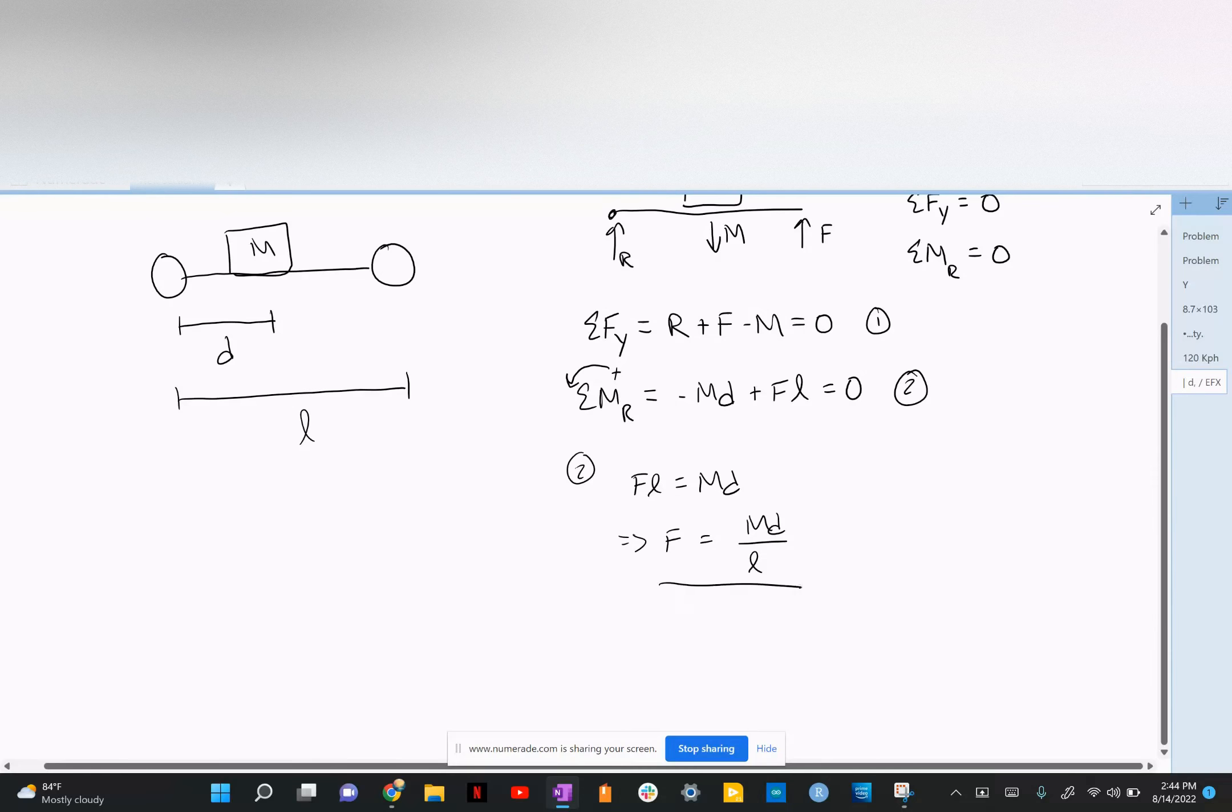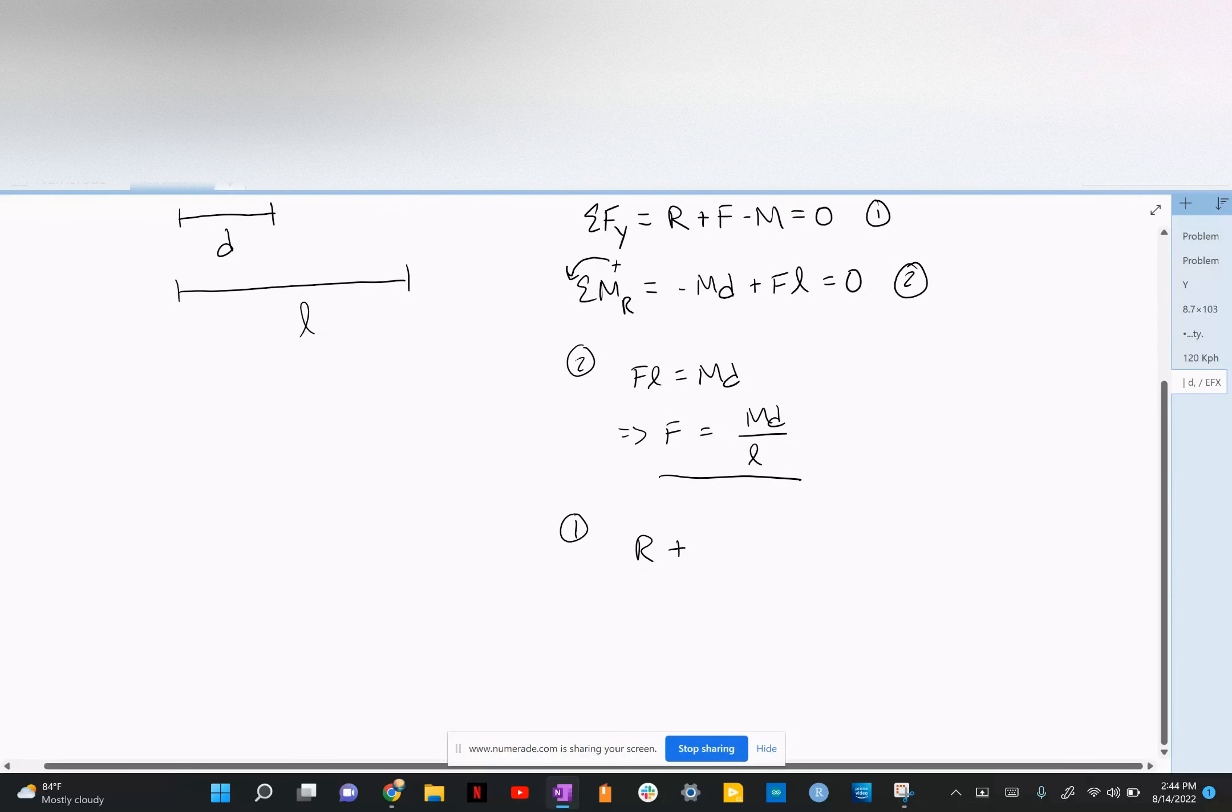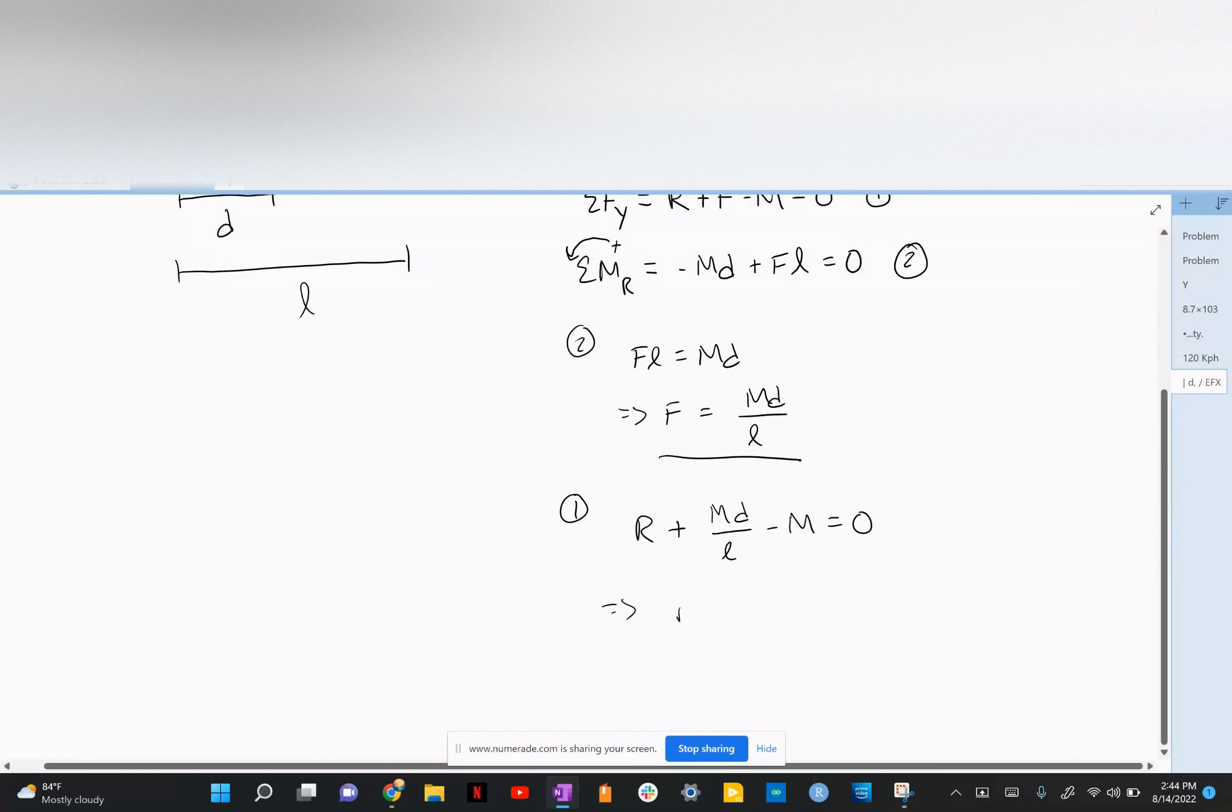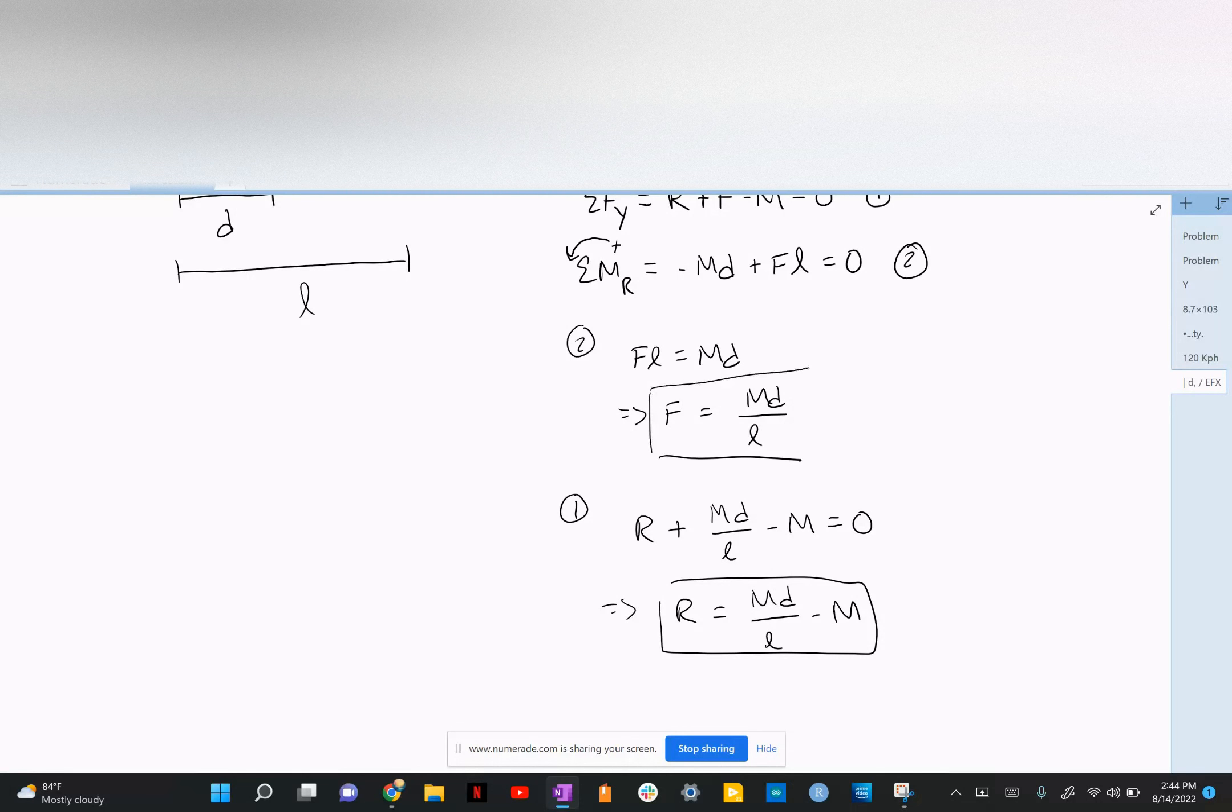And then plug this back into equation one: R plus MD over L minus M is equal to zero. Therefore, R is equal to MD over L minus M. These are your two equations.